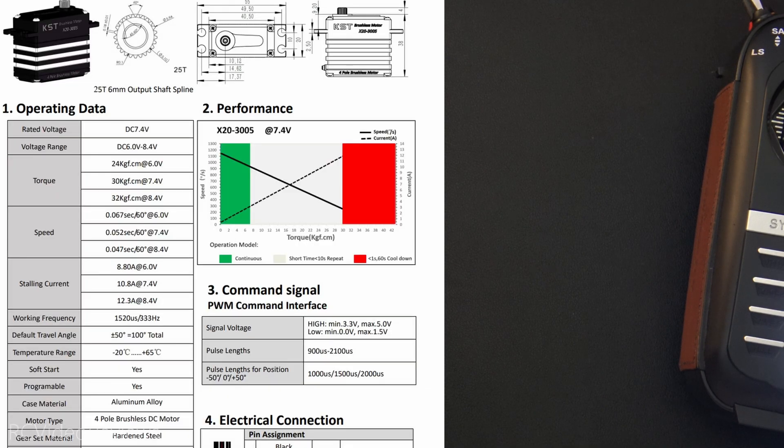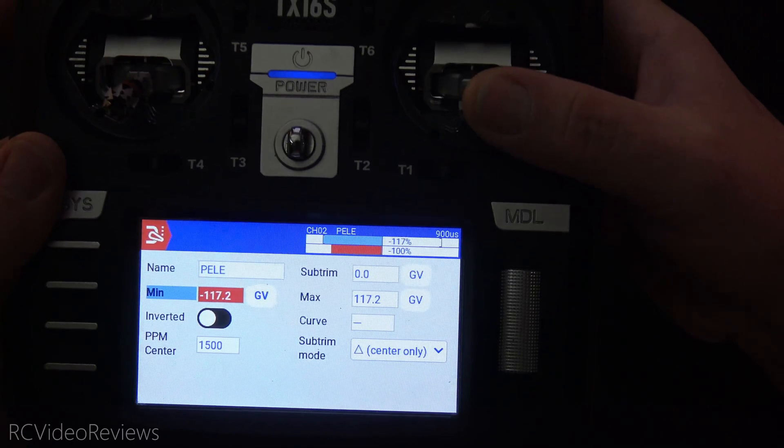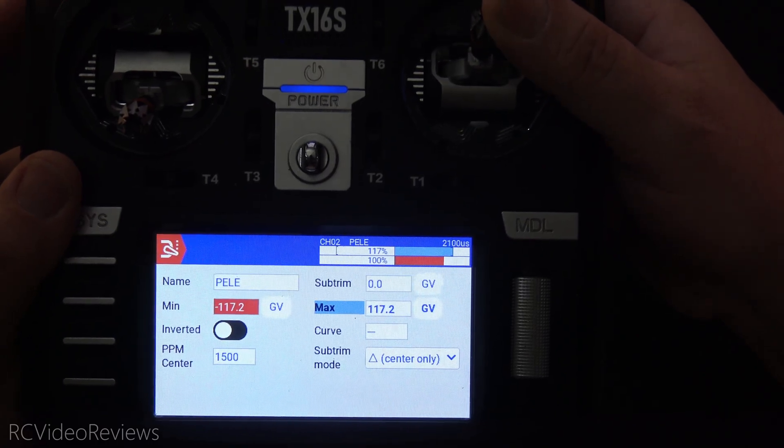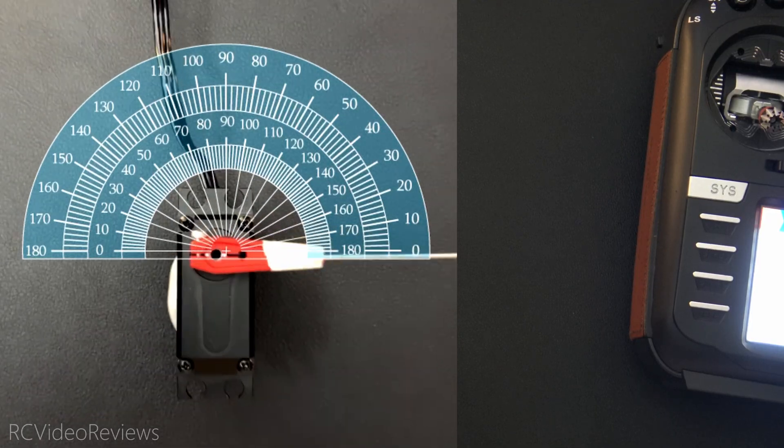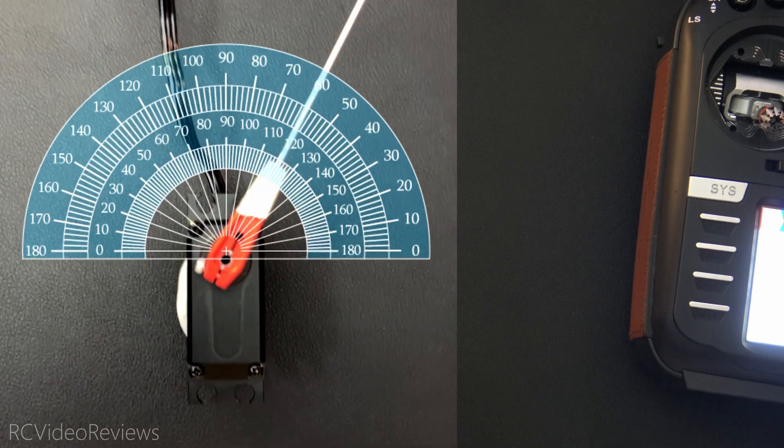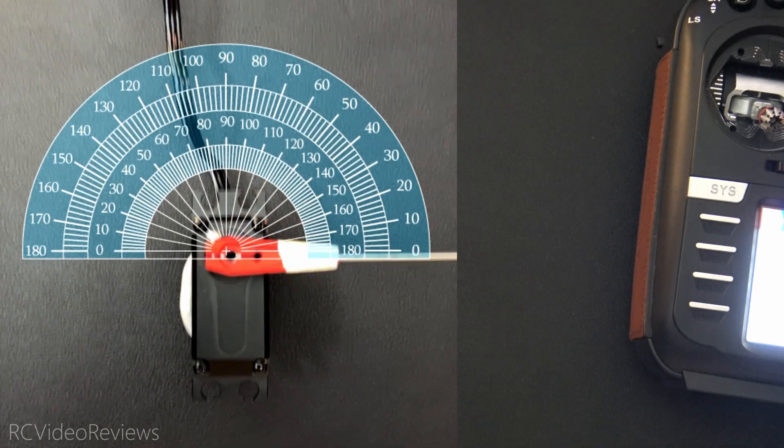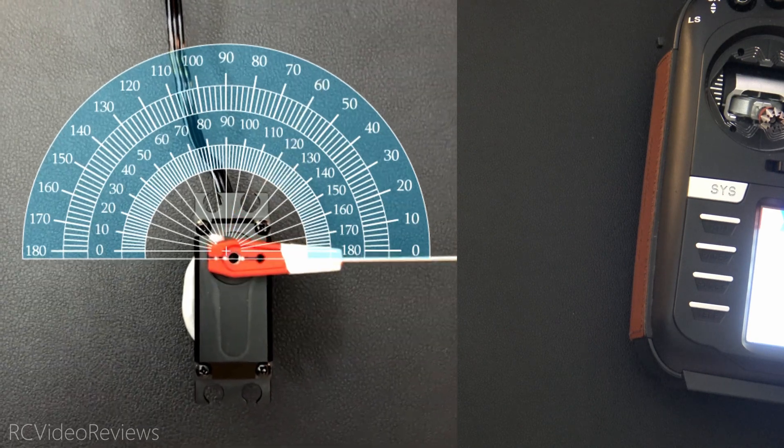First up, I want to do a little experiment with the 3005, because the book says the default travel angle is 50 degrees plus or minus, so 100 degrees total, and it shows pulse lengths at 900 microseconds to 2100. What I've done in my radio is I've set my min and max for one of my controls, the elevator, to show me 900 microseconds on the low side and 2,100 microseconds on the high side. Now I've got a little protractor over the top of the servo. I'll hit a switch, which should max out the travel. And there we go. We've got about 60 degrees, so zero and 60 degrees. And that does work using a pulse width output on the radio of 900 microseconds to 2,100 microseconds.